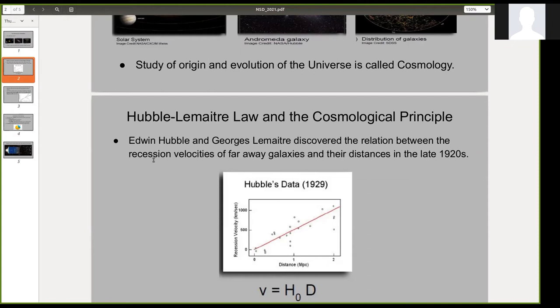First is the Hubble-Lemaitre law. In the late 1920s, Lemaitre theoretically derived an expression between recession velocity and distance of a point in space, which happens to be a linear relation for small distances. You can see it here.